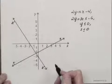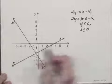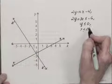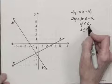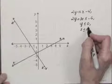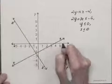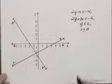Y equals 0 is the X-axis. So the X-axis is another, is the graph of another related equation. And Y less than or equal to 0 is all the points on the X-axis and below it.